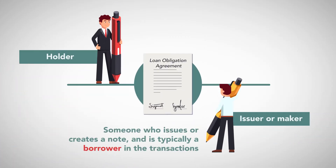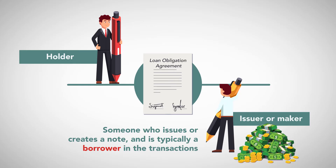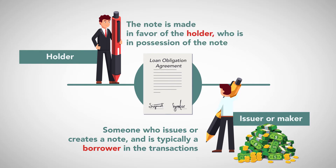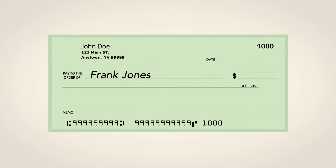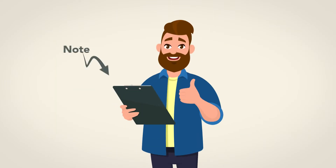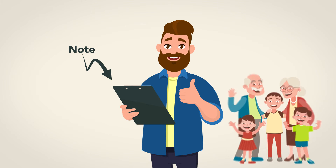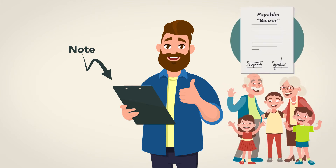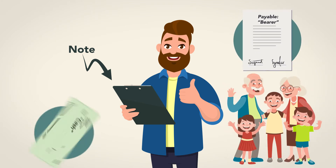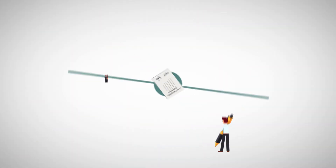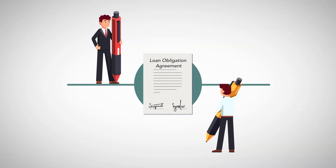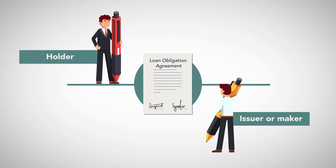An issuer or maker is someone who issues or creates a note, and is typically a borrower in the transaction. The note is made in favor of the holder, who is in possession of the note. A draft or note may be payable to a specific person, or to the bearer, who is in possession of a note at any given time. Anyone can be a bearer, and paper payable to bearer is comparable to a check made out to cash.